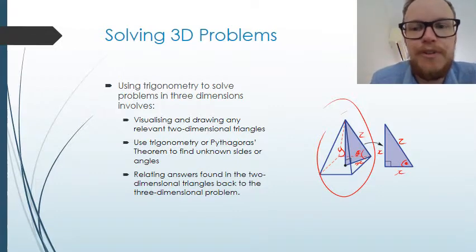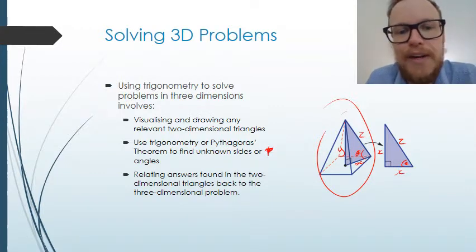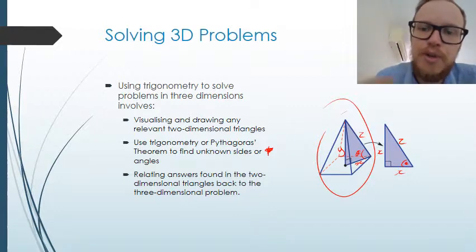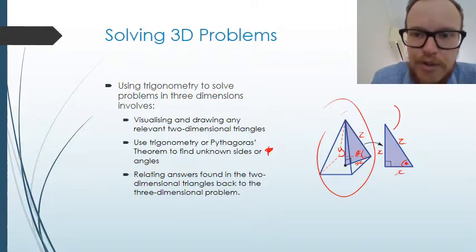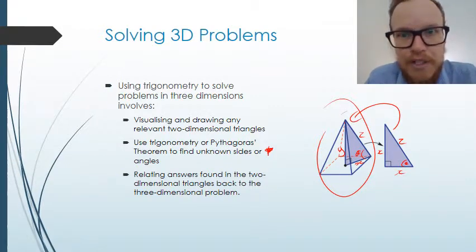Once we've got those two-dimensional representations it should be a lot simpler to then use trig or Pythagoras's theorem to find unknown sides or angles, and then we need to make sure that we relate our two-dimensional triangles back to the three-dimensional image once we've solved the problem.